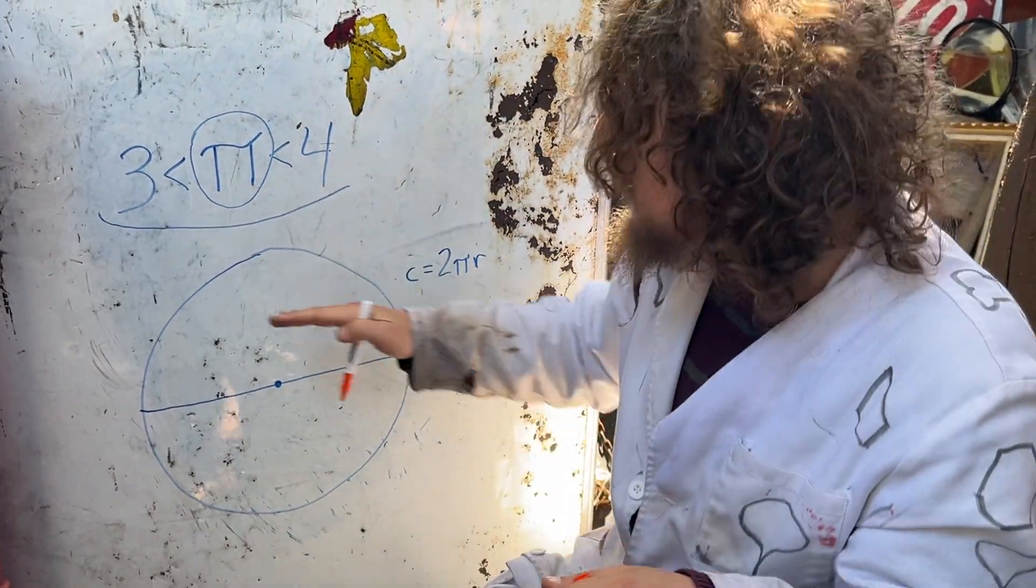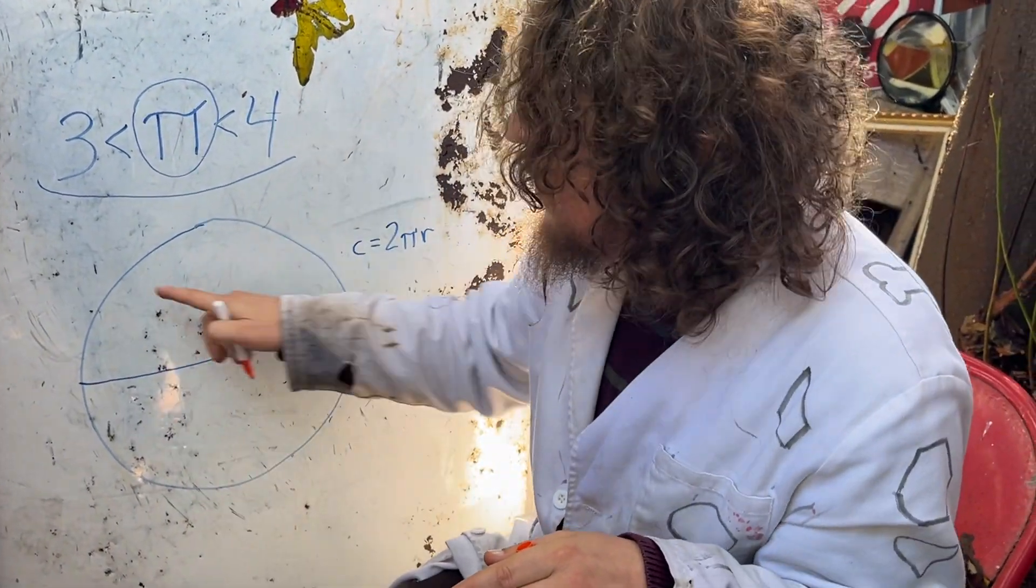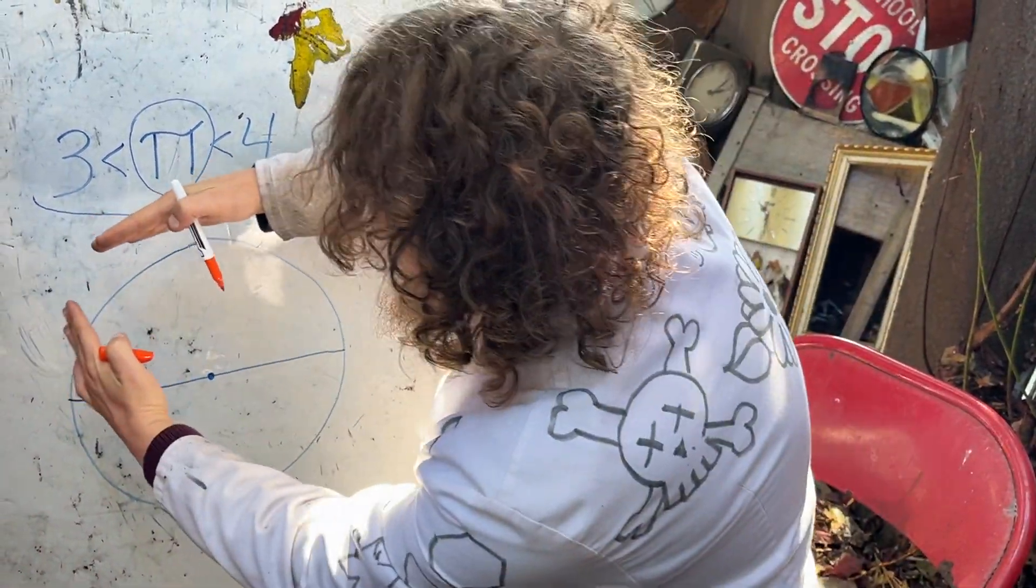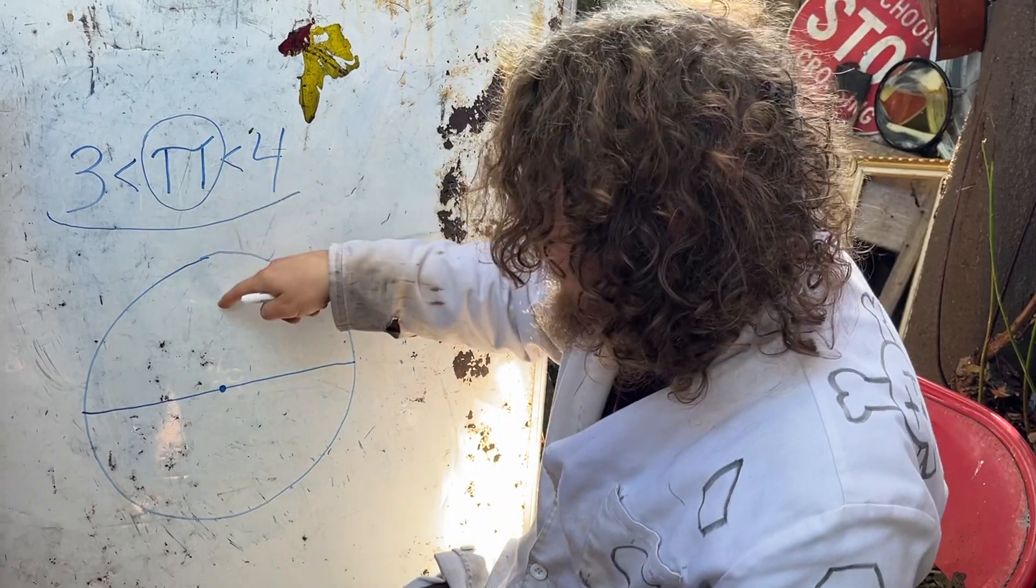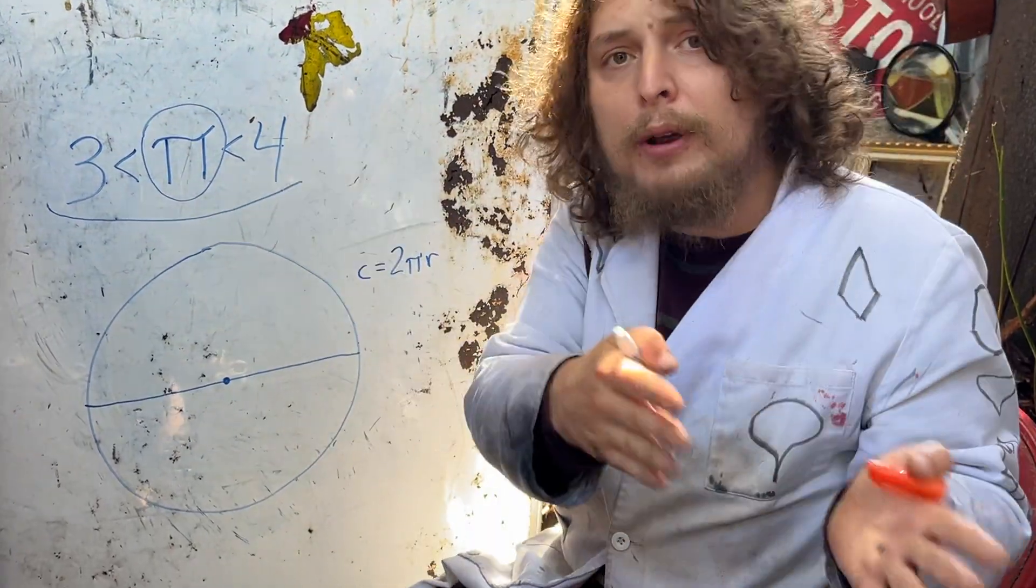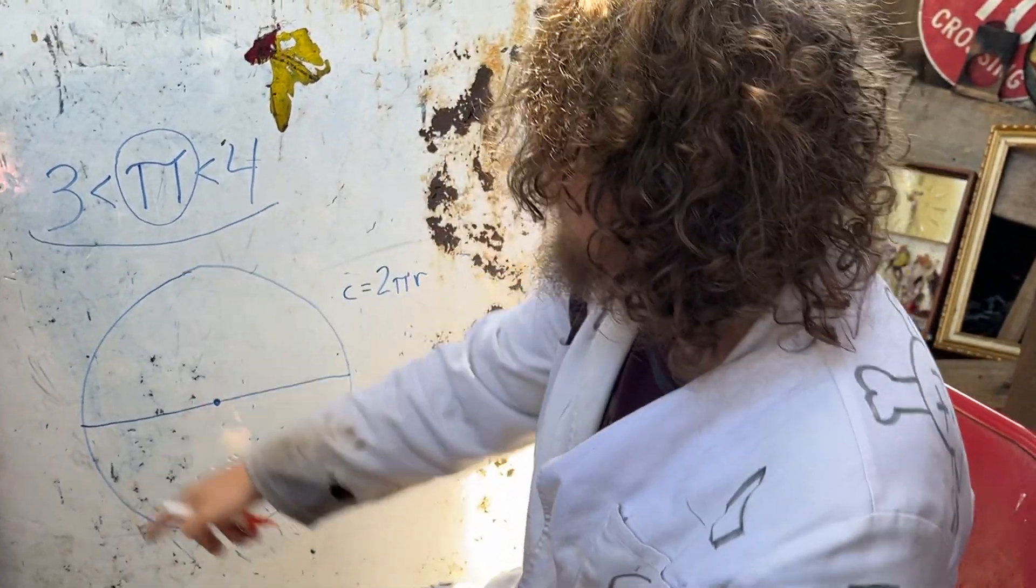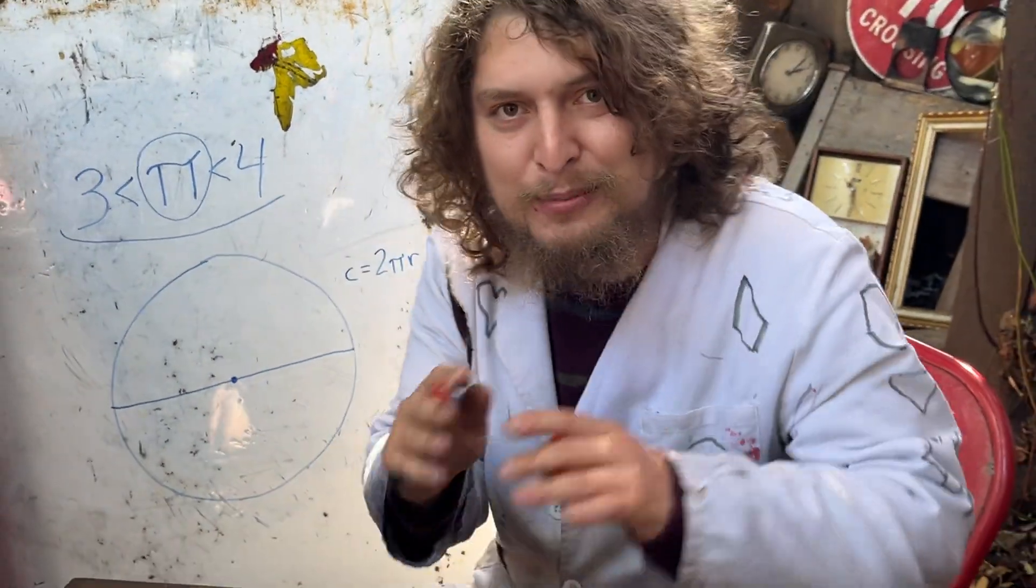We know that polygon must have a smaller perimeter than this circumference. And similarly, if a polygon was outside the circle and had no points that went inside, we'd know the perimeter of that shape must be larger than this circumference.